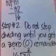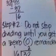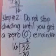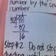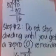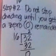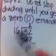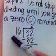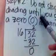Next, do not stop dividing until you get a 0 remainder. So since the remainder of 48 divided by 32 is 16, let us now divide 32 by 16. We get 32 divided by 16 is equal to 2, because 2 times 16 is 32. 32 minus 32 is equal to 0.